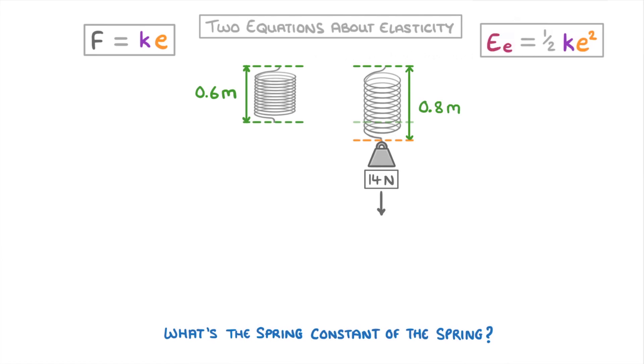Well first, we need to figure out what's going on. As the spring has stretched from 0.6 to 0.8 meters, we can find this extension by subtracting 0.6 from 0.8, which gives us 0.2 meters. So we now know the force and the extension, and we want to find the spring constant.